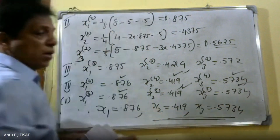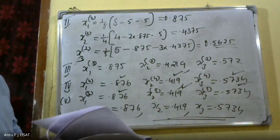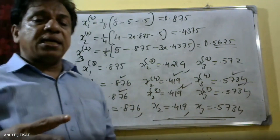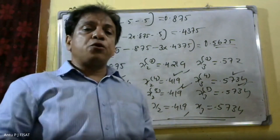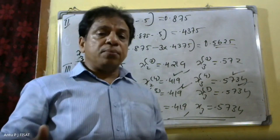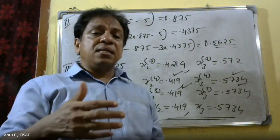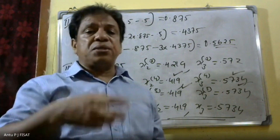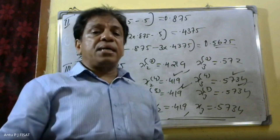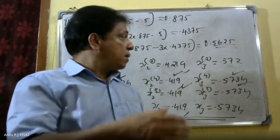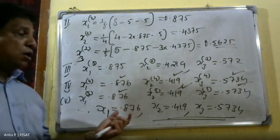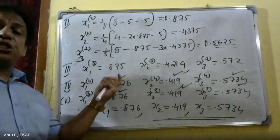Therefore, the equations are solved and the final values are: x1 equals 0.876, x2 equals 0.419, x3 equals 0.5734. We can observe convergence through the Gauss-Seidel iteration method because the system is diagonally dominant. With minimum range of iterations, these values become stable and appropriate.